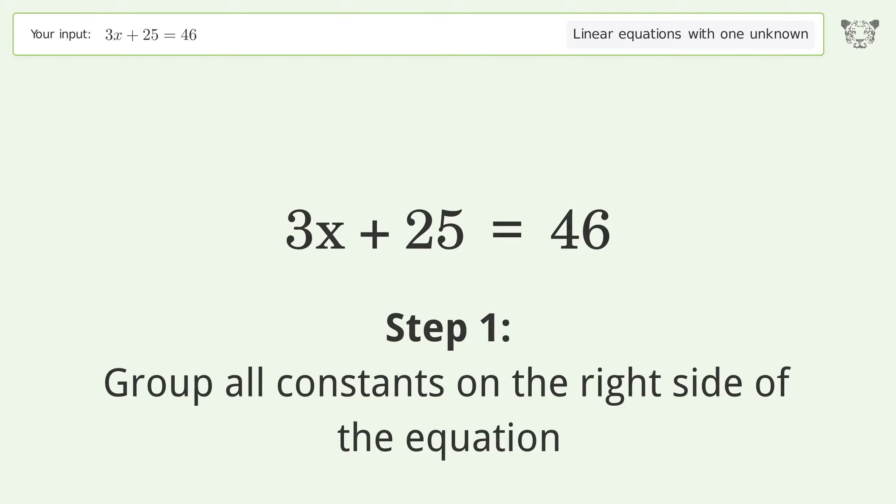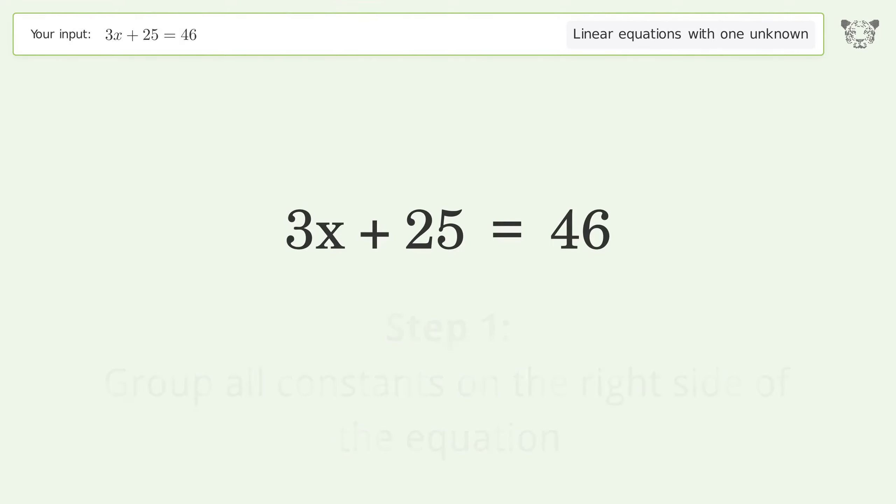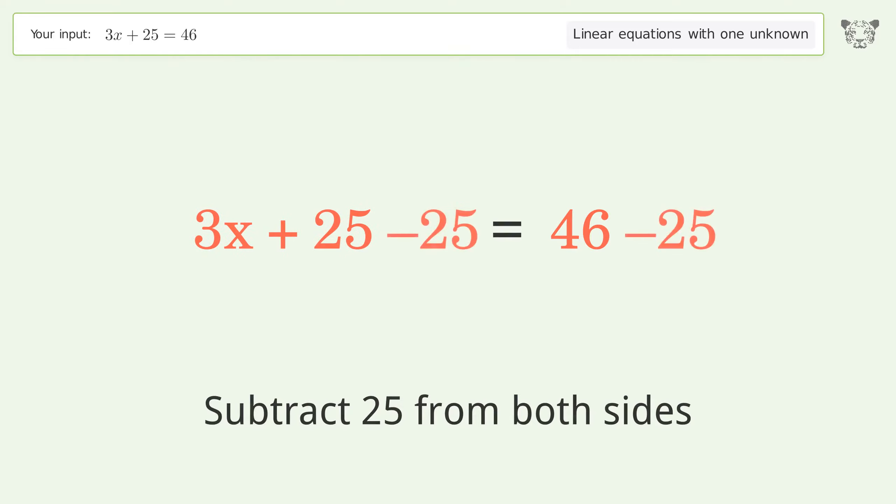Group all constants on the right side of the equation. Subtract 25 from both sides. Simplify the arithmetic.